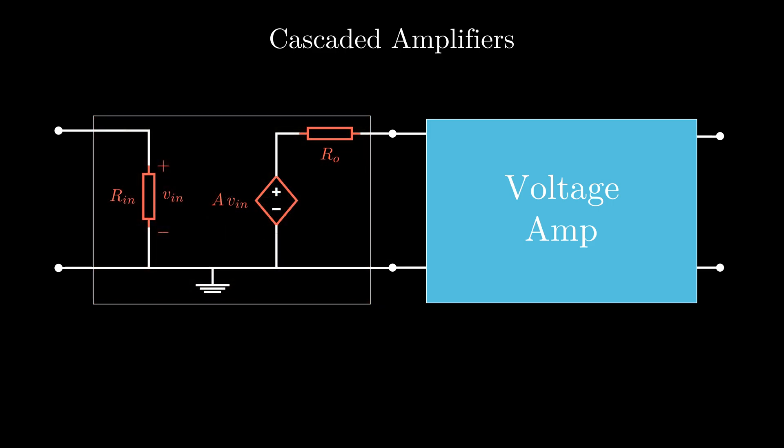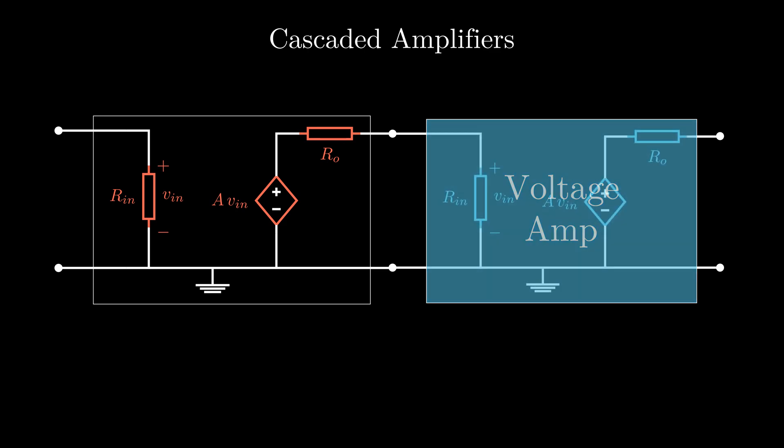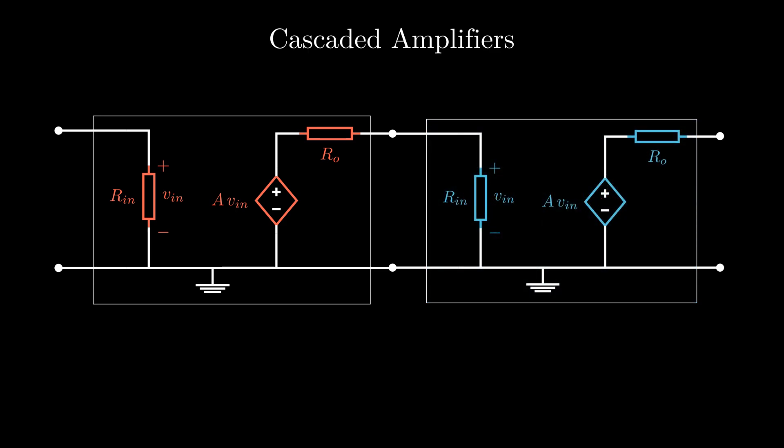The first amplifier has a finite output impedance and the second amplifier has a finite input impedance. So there's a voltage division between the output impedance of the first stage and the input impedance of the second stage. Ideally, if Rout is much much smaller than Rn, then this expression is almost 1 and the entire output of the first stage is transferred to the next stage.